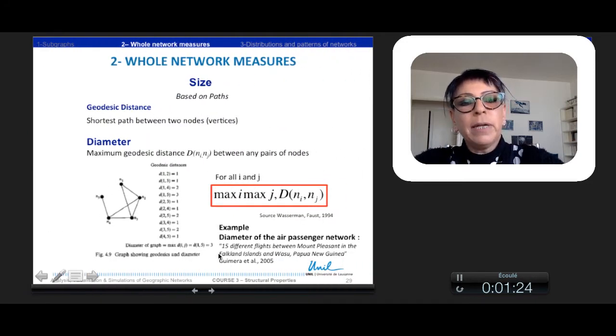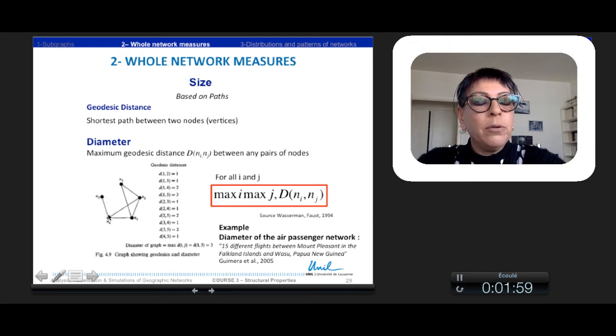The measure can be also based on paths. And we can take into account the geodesic distance, which is the shorter path between two nodes, taking into account the maximum geodesic distance between pairs of nodes I and J. And so for I and J, we can take the maximum. Here, for example, in this graph, the maximum is 3 between node 1 and node 3.